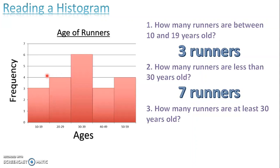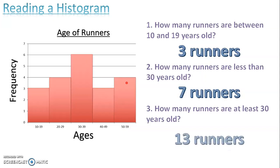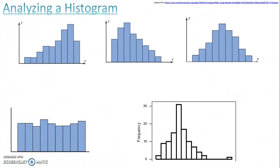We're adding those two bars together. It works the other way too — how many runners are at least 30 years old? They can be exactly 30 or more than 30, so I take six plus three plus four and get that there are 13 runners. That's how you read a histogram.